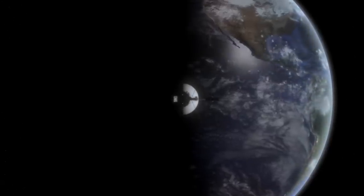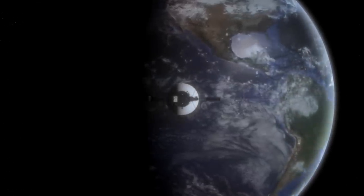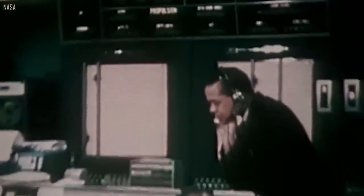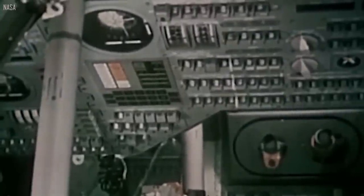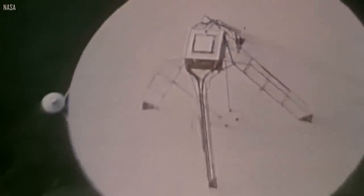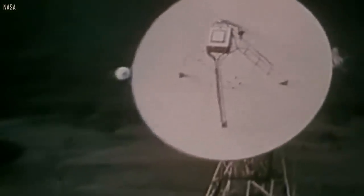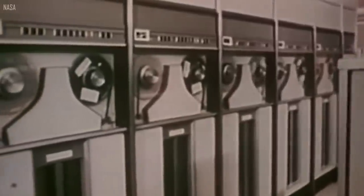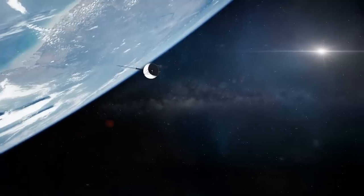Flandro projected that the journey duration between Earth and Neptune would decrease from 30 years to 12 years as a result of the frequent gravity aids. One drawback though, the alignment only takes place once every 176 years. As it turned out, NASA created two spacecraft to make the most of that once-in-a-lifetime chance.